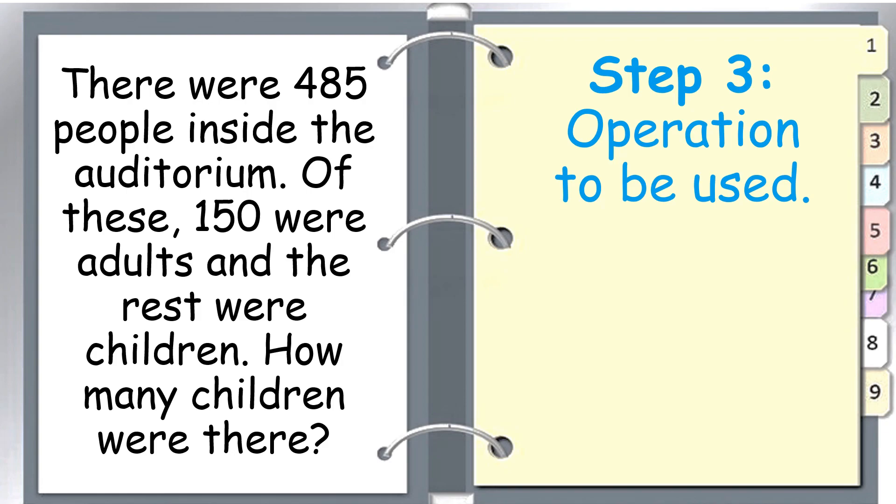Step number three is we need to know the operation to be used. We will use subtraction because we need to know the total number of children inside the auditorium.